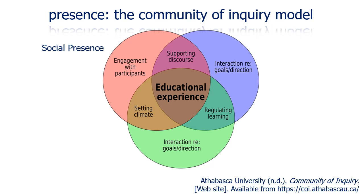Garrison, Anderson, and Archer's Community of Inquiry model outlines the areas of presence that contribute to maximizing learner engagement. These are social presence, cognitive presence, and teacher presence. Social presence is the level of engagement between learners. Cognitive presence is the level of engagement with the learning content and how well this is facilitated through the articulation of goals and direction provided to the learner. Teacher presence is the level of engagement with the teacher in an instructional role. In choosing what technologies to integrate and how we plan to use them, we should carefully consider how those tool choices will impact each of these presences — using technology to increase the presences, thereby increasing overall engagement.